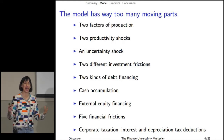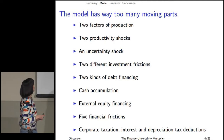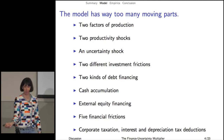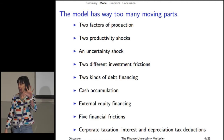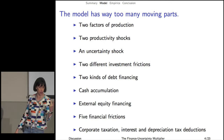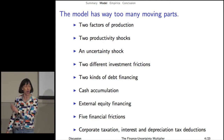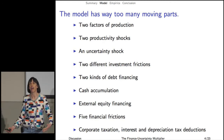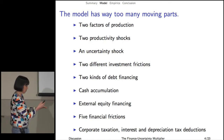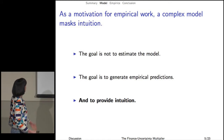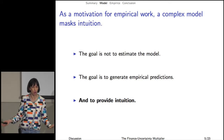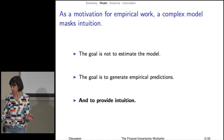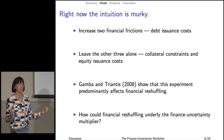This sounds like Dimitris' discussion. The model has way too many moving parts. Here they are: there are two factors of production, two productivity shocks, an uncertainty shock, two different investment frictions, two kinds of debt financing, cash accumulation, external equity financing, and five financial frictions — a cost of external equity financing, costs of issuing both short-term and long-term debt, and collateral constraints on both. On top of all of this, there's corporate taxation with a depreciation tax deduction and an interest tax deduction. As much as I've been known to write down complicated models, this is even too much for me. The goal of this paper is not to estimate the model but to provide some qualitative predictions for empirical work and to provide intuition. And in my mind, the intuition right now is a little bit murky.